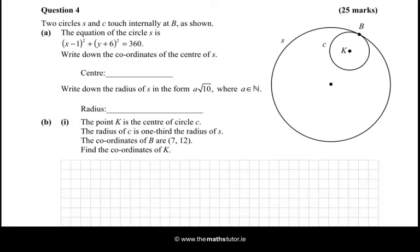Hello there. In this question we're shown two circles, S and C, which touch internally at B as shown. S is the big circle and C is the small circle. The equation of the big circle S is (x - 1)² + (y + 6)² = 360.